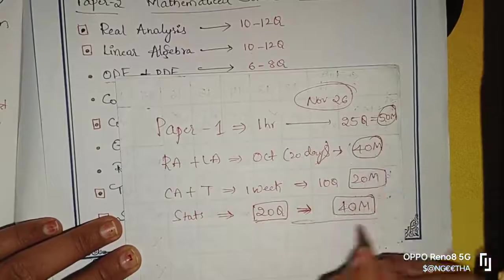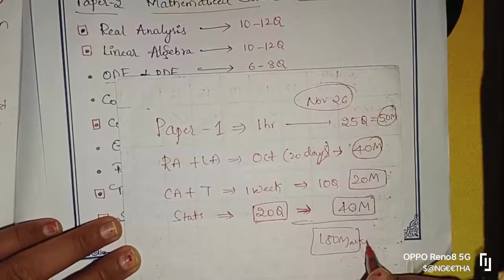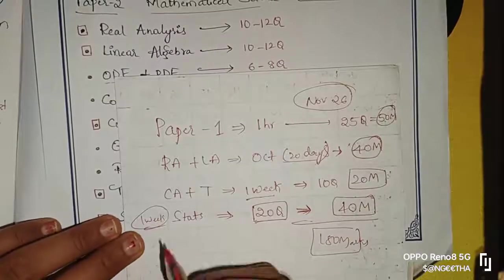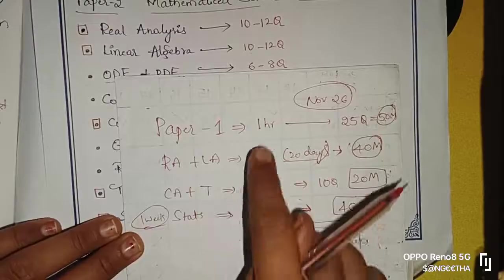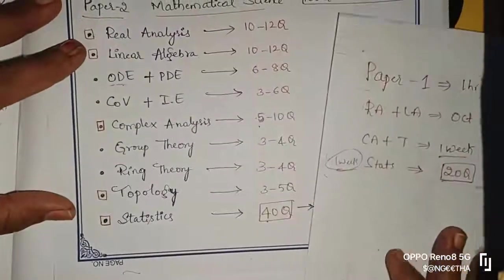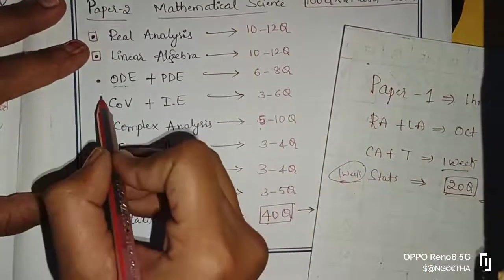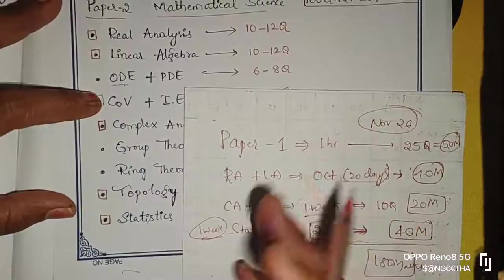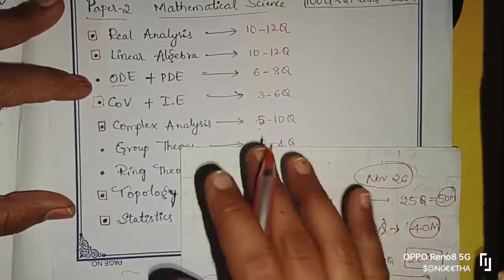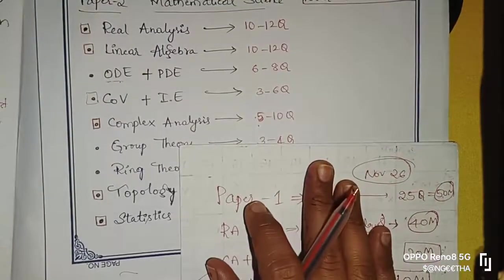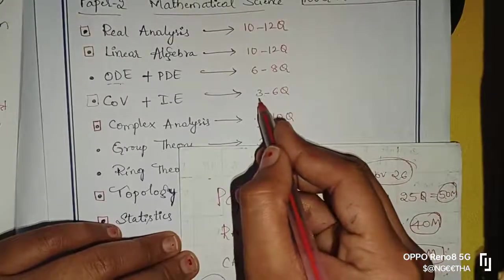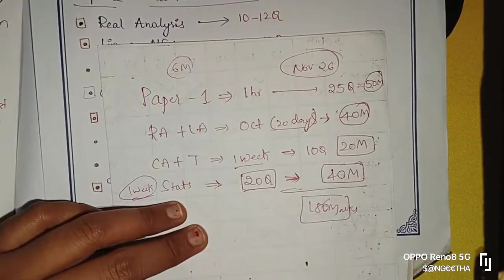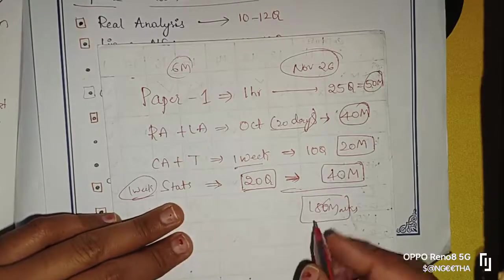So overall: 40 plus 40 plus 80 plus 20 equals 150 marks. Done. 150 marks - you take 20 days for real analysis and linear algebra, 1 week for complex analysis and topology, 1 week for stats, then revision. Minimum 3 questions from remaining topics gives 6 marks, so you get 156 - that is your safer side, always above the cut off.